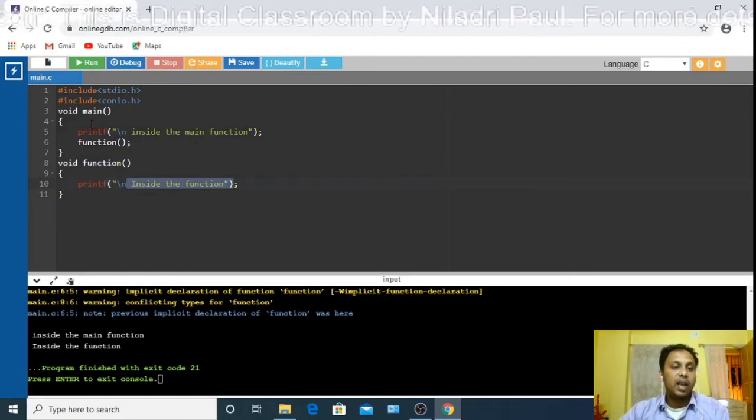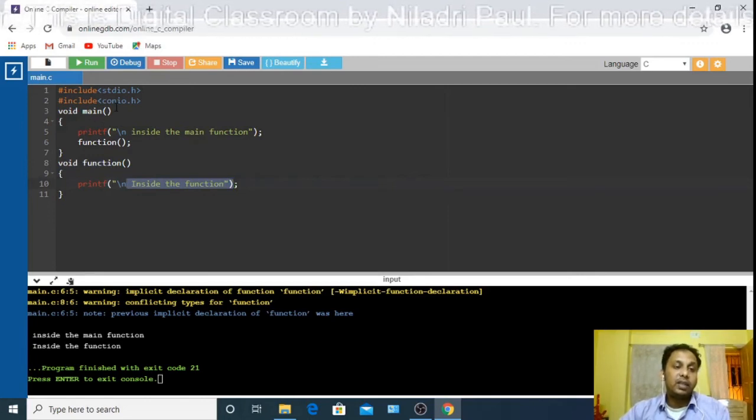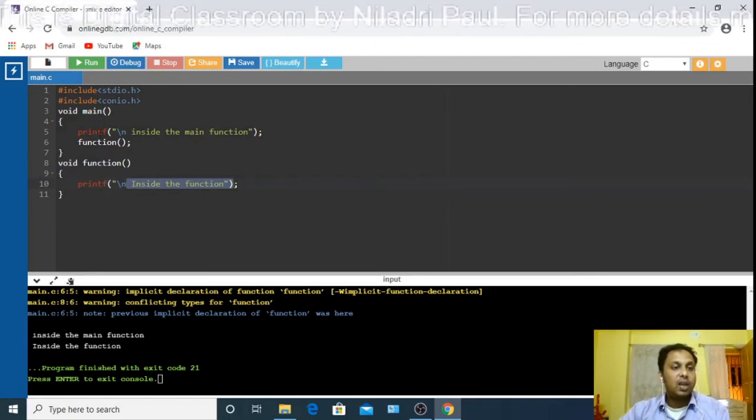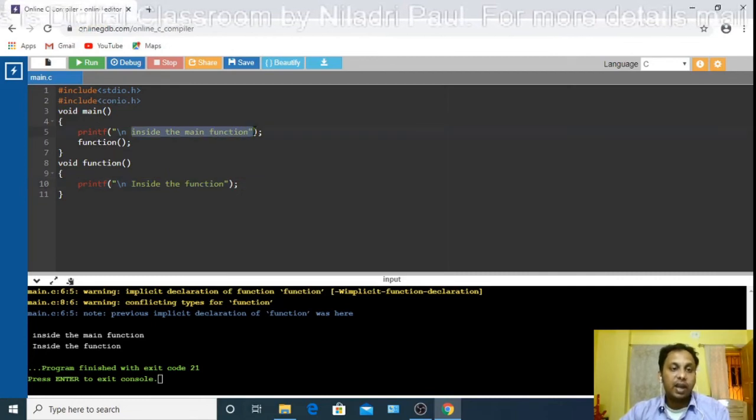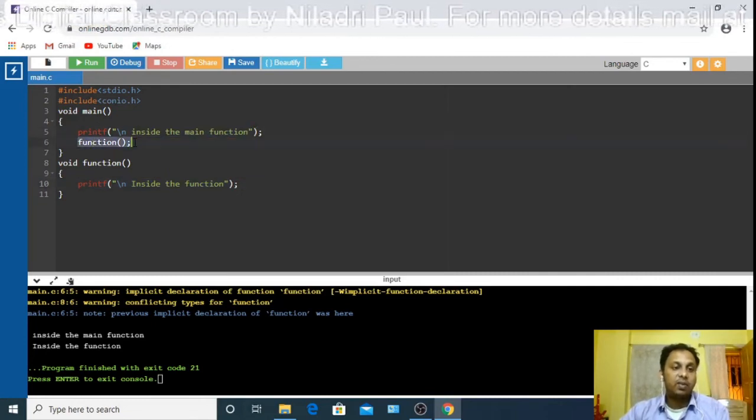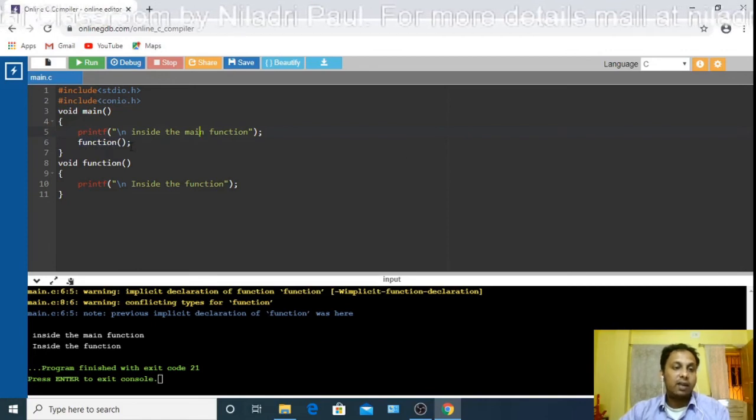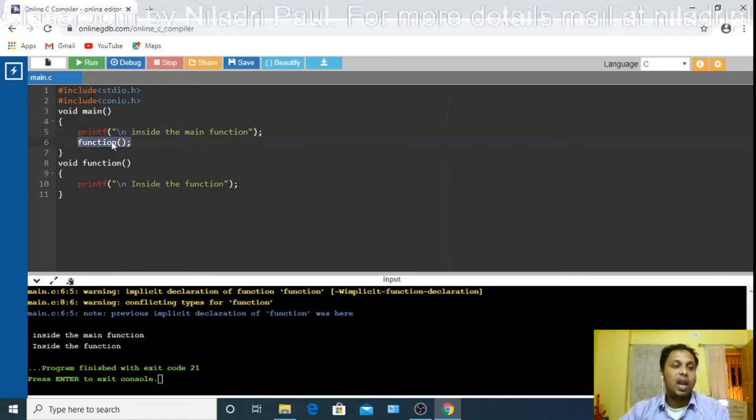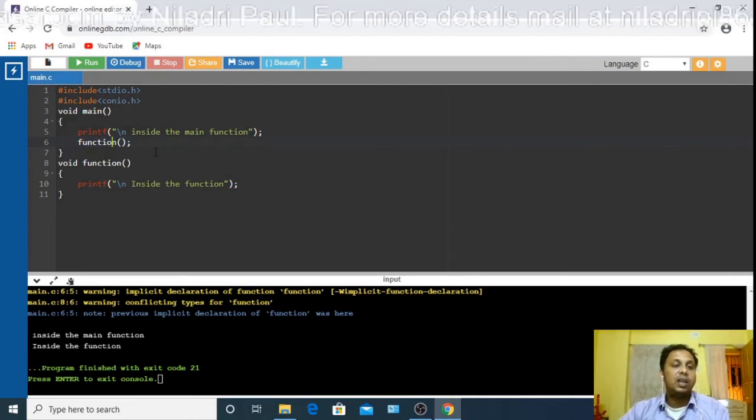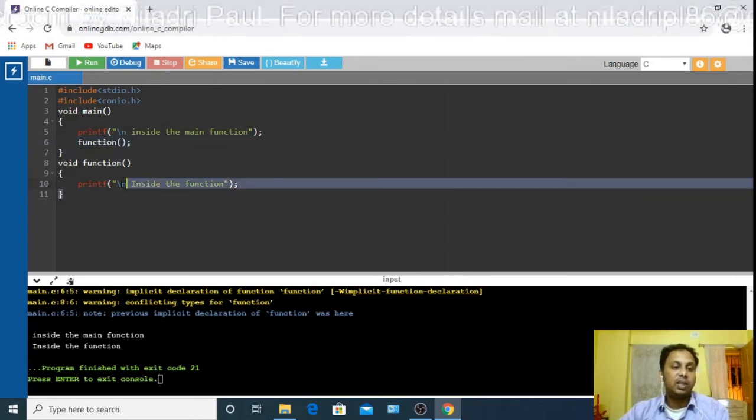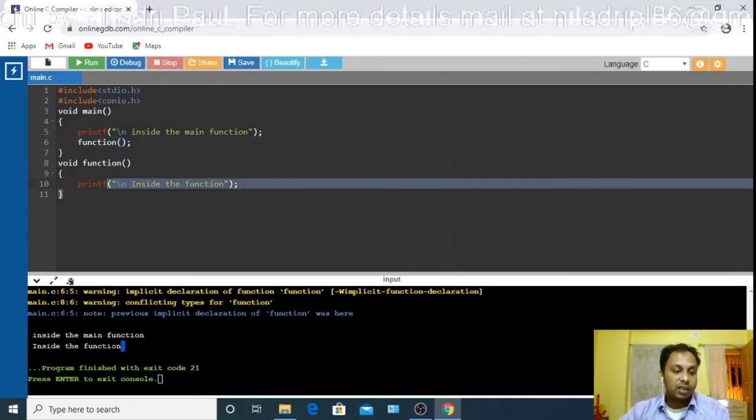So in our output, at first, as we know, the execution starts from void main. So at first, this line will run. After that, this function will work. So at first, inside the main function will run. And after that, the function will work. What is the use of this function? The use of this function is to print this one. So this is the final answer.